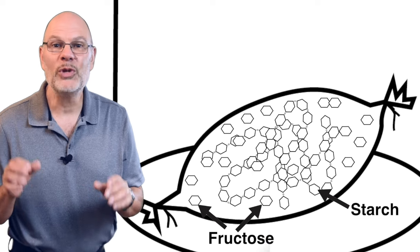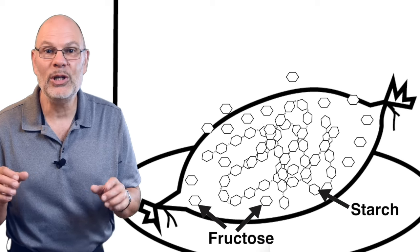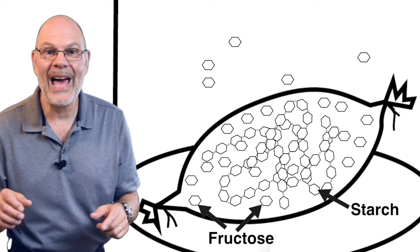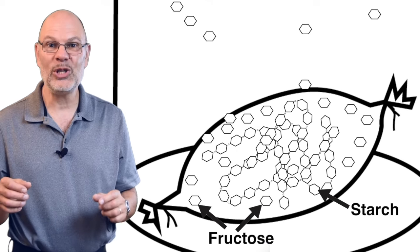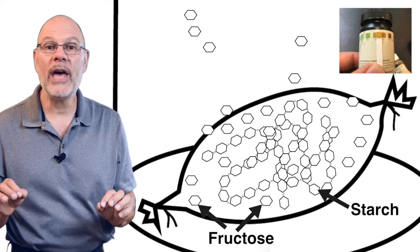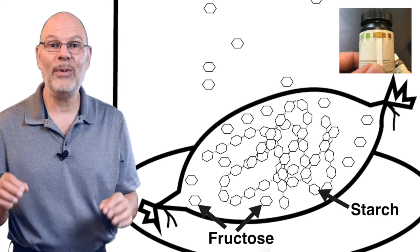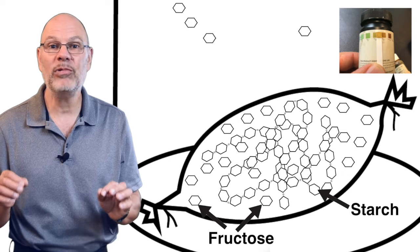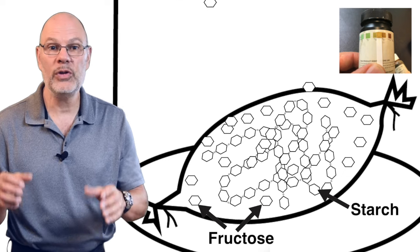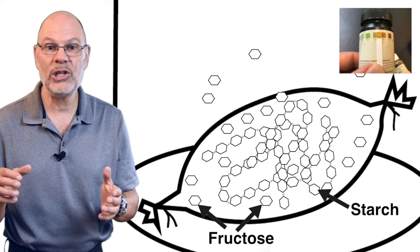Fructose was also able to diffuse through the bag and enter the solution in the cup. We know that because we were able to detect the presence of fructose through the test strip. So the dialysis tubing is permeable to fructose and iodine, but not starch.